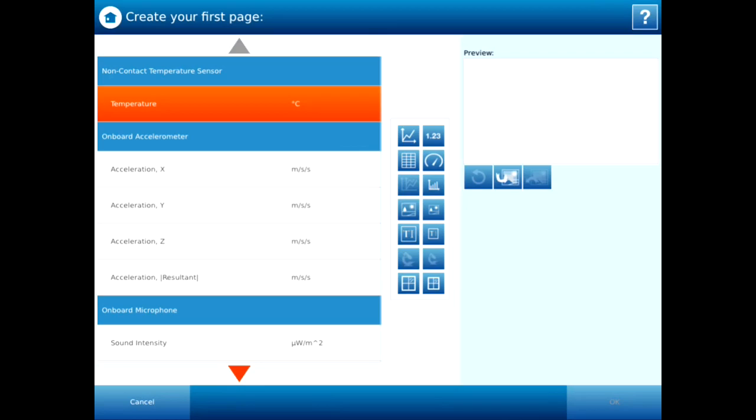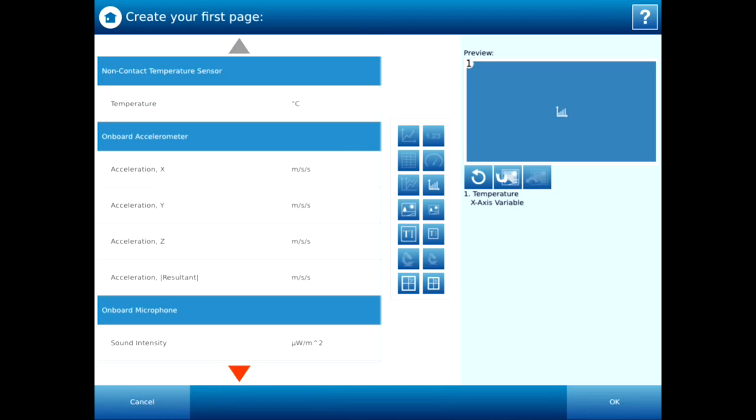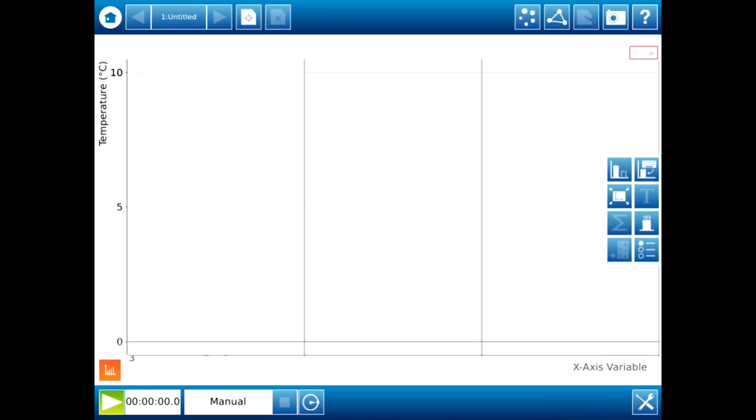Then I need to select Bar Graph. So you can see the icon there on the right-hand side, about three down. So once that is selected, I press OK, and then we're ready to start collecting data.